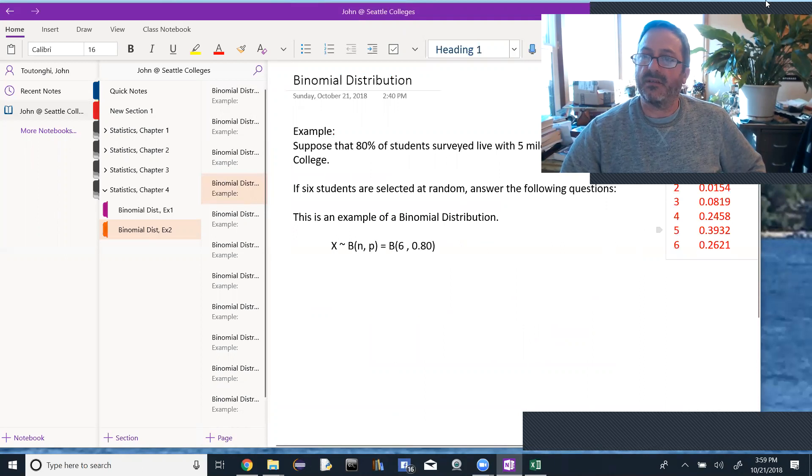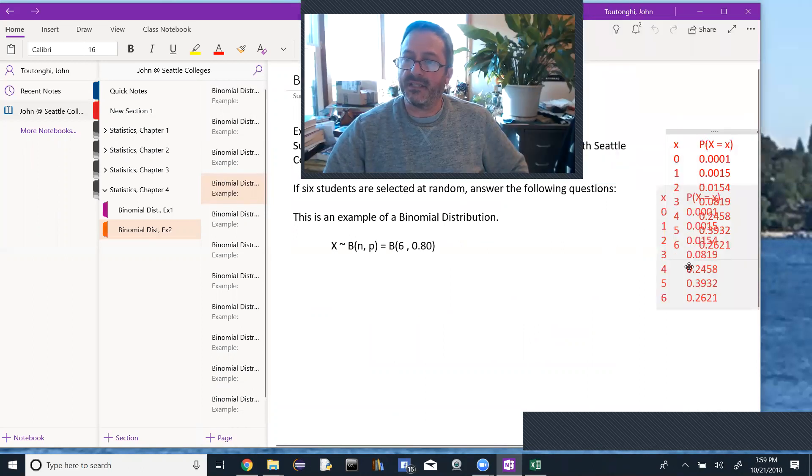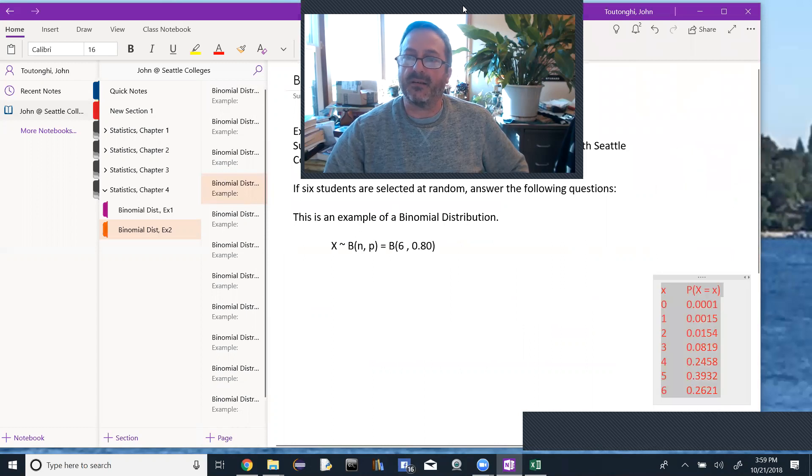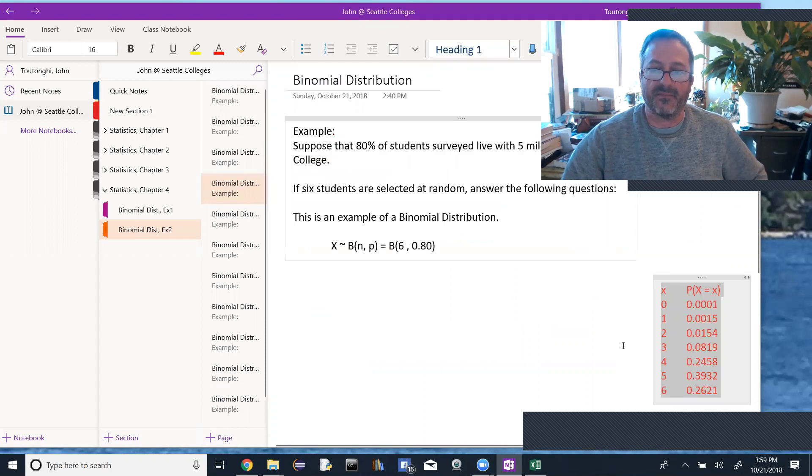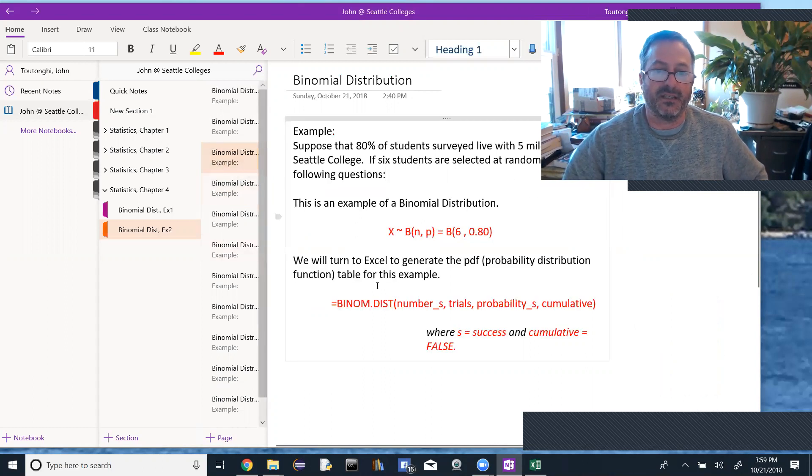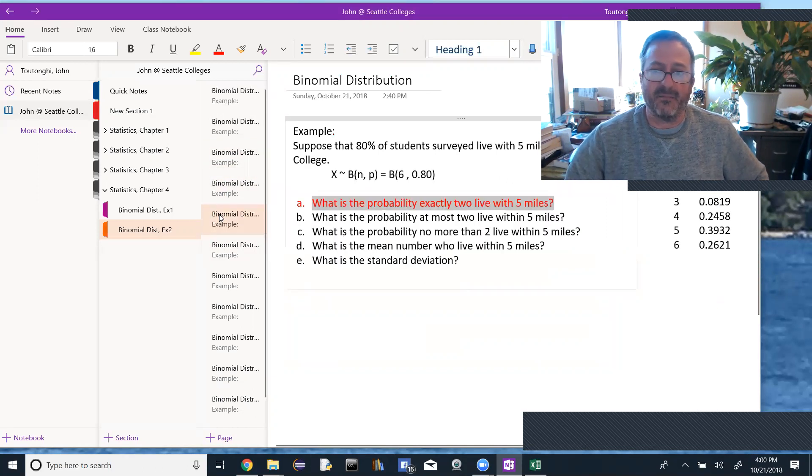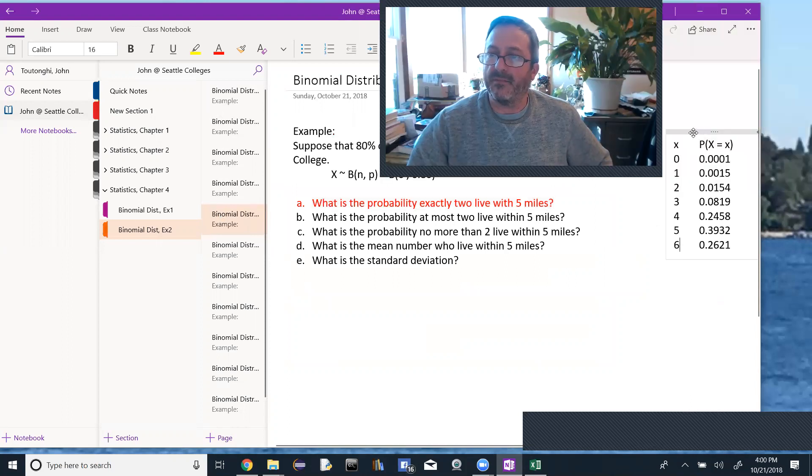So we generate our table, and we see the outcomes, the possible outcomes for X, all possible values of X from 0 to 6. So I had to fill in the 0 through 6, and then the probabilities we got just like we did in the last video using this function in Excel. So I won't do that again. We will just go on to answering these questions using the table.